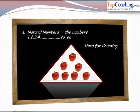So natural numbers are the numbers which are 1, 2, 3, 4 and so on, and these numbers are used for counting. Now natural numbers are denoted by the set N. So whenever we write N it denotes the set of natural numbers. So this was all about natural numbers.